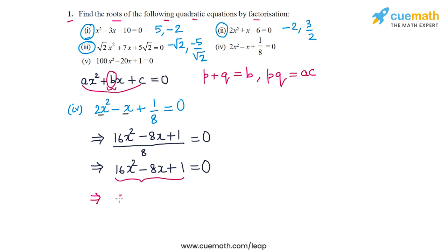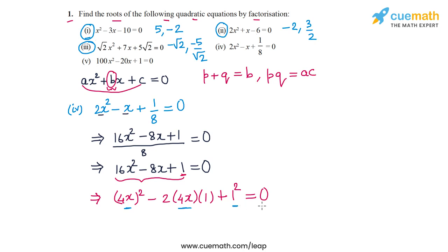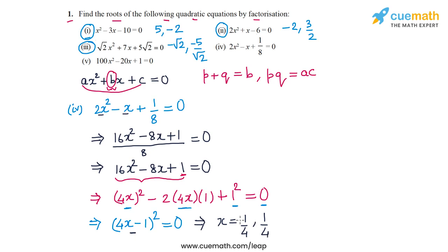The expression 16x² - 8x + 1 is of the form a² - 2ab + b², so it factorizes as (a - b)² = (4x - 1)² = 0. The two linear factors are identical, so the two roots are identical: x = 1/4 and x = 1/4. That solves part 4.